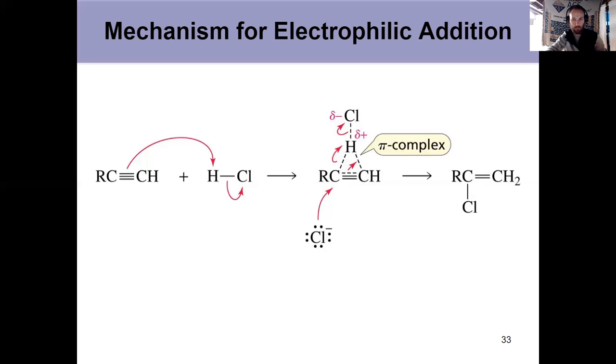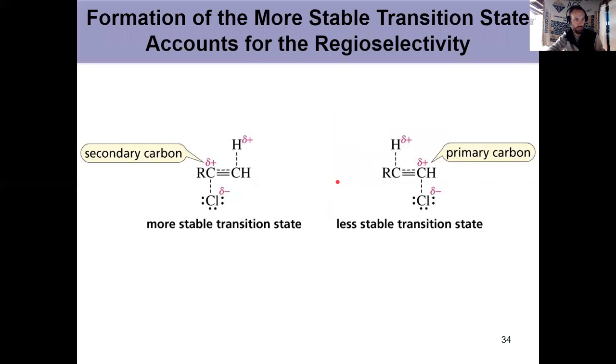Considering the transition states, we want the partial positive to be here on the more substituted carbon, which is exactly what we see - more stable transition state by putting the chlorine on the more substituted carbon.